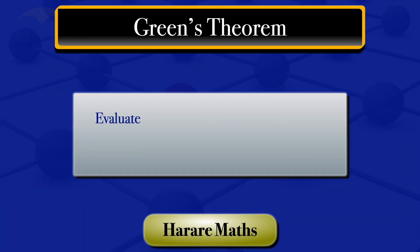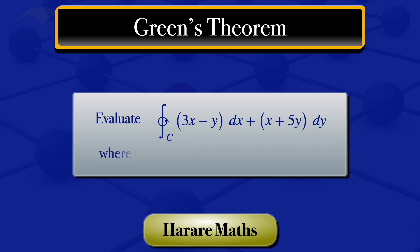In this video, I'm going to evaluate the integral along the closed curve C in the positive direction of 3x minus y dx plus x plus 5y dy, where C is the curve x squared plus y squared equals 1.